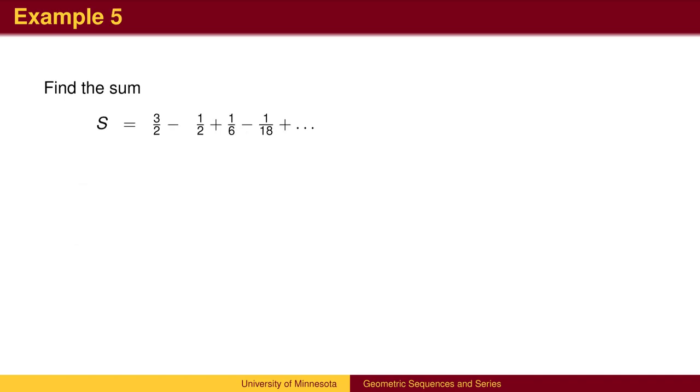Here's an alternating sum. Again, we multiply by the common ratio of 1 third. In this case, the terms will cancel if we add. Again, every term except the first cancels. And we can solve for s.